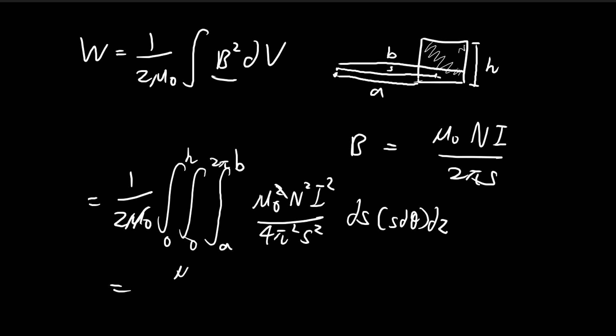Immediately we can take away some of the constants first. So 4π², N², I², and then immediately you see that there are no z terms inside, so I can integrate this out first and get h. There are no θ terms, so I can integrate out 2π. There's an s here that's cancelled out, so all we're left with is this rather simple integral.